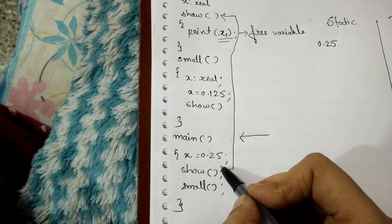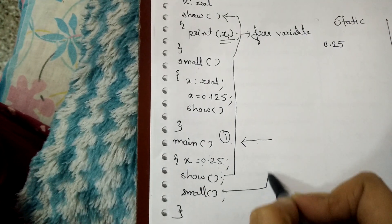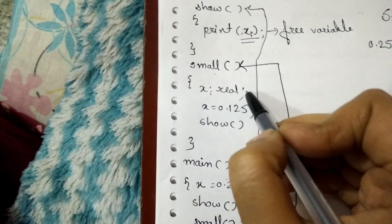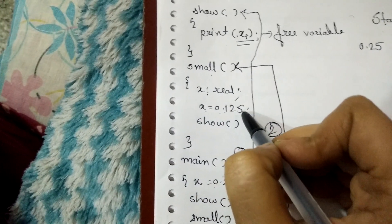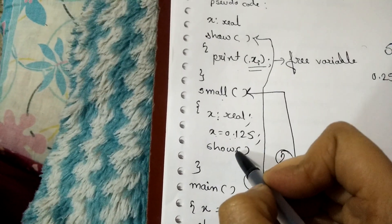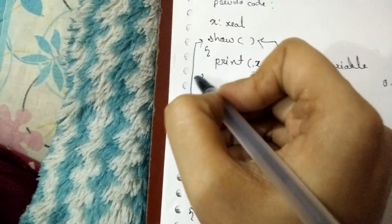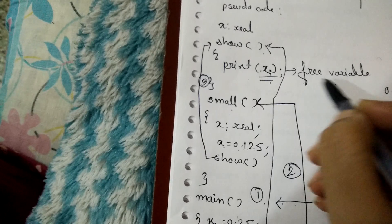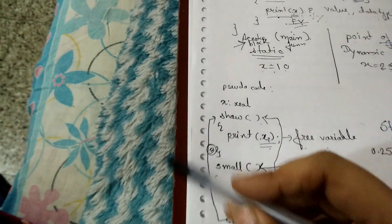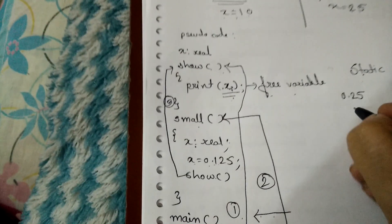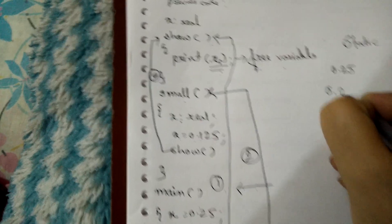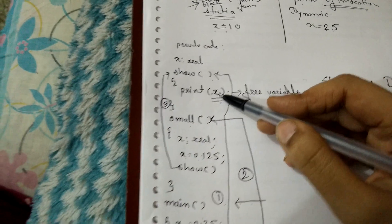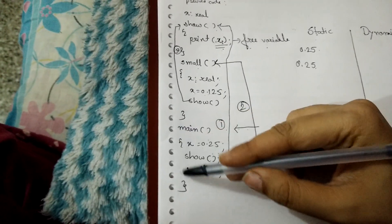Next we come back to the main function, and the second call is for small. Inside small we have X as a real with value 0.125, and then the function show is called again. Control transfers to show, where X is again a free variable. In static scoping, we refer to the ancestor block, which is the main block, so the value printed for X is again 0.25. In static scoping, both times the value printed is 0.25 because the free variable always refers to the ancestor block, which is the main block.